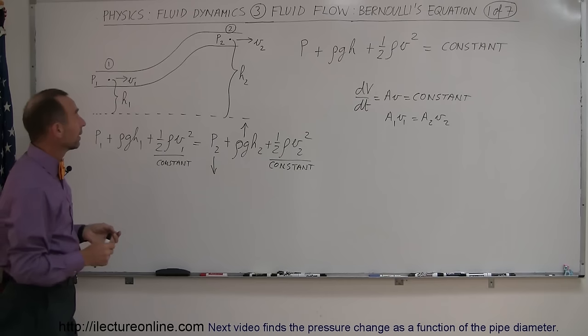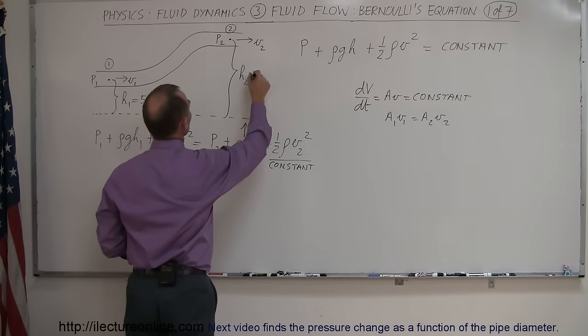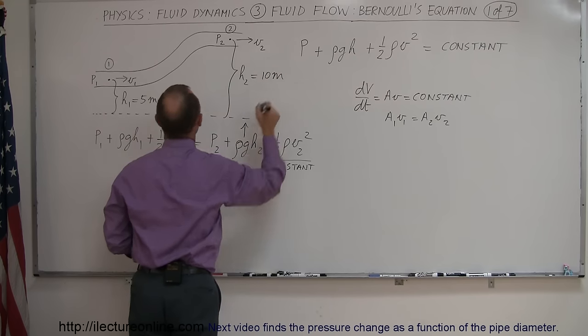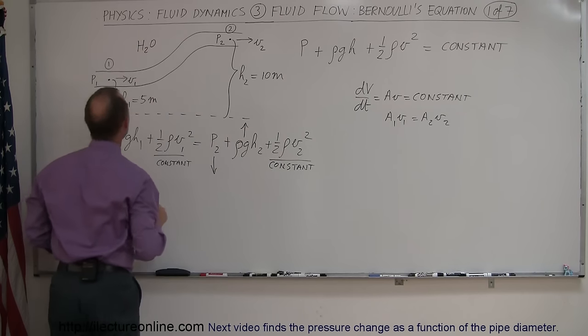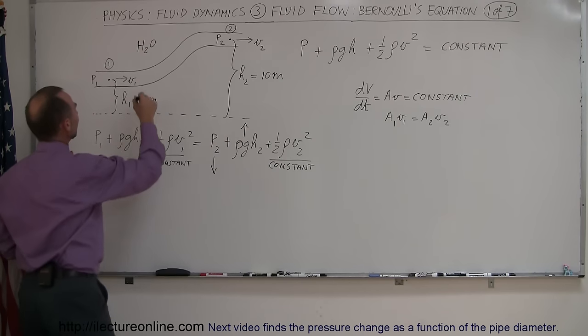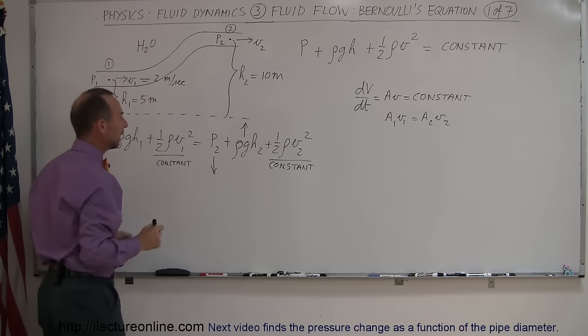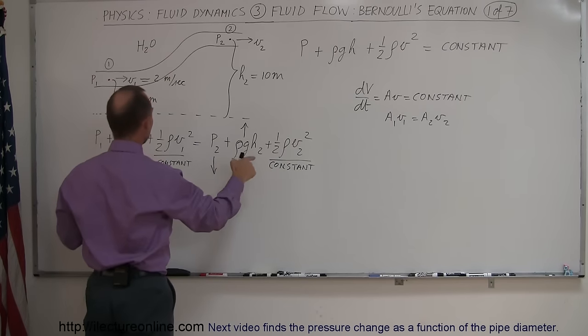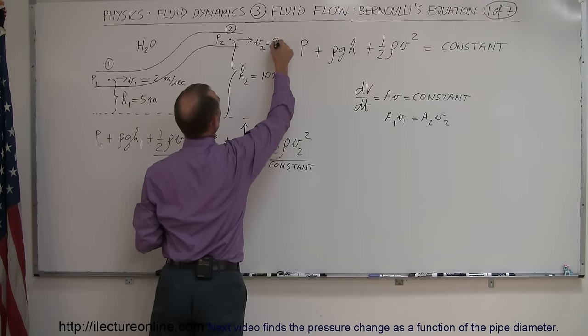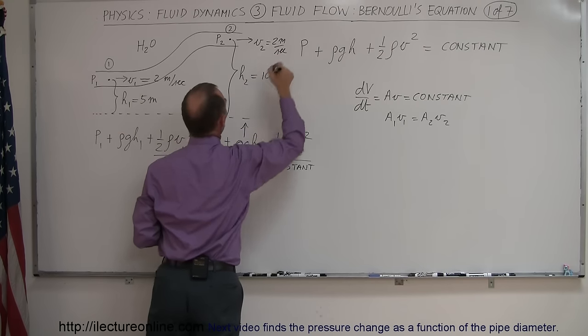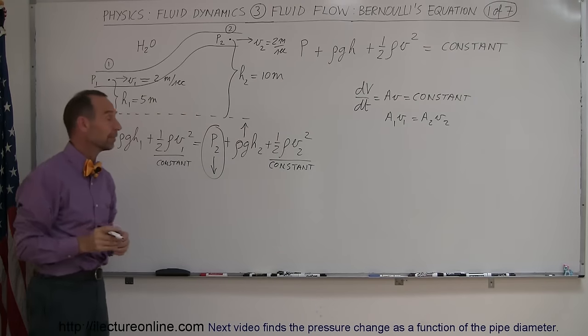Let's say that this height is equal to five meters above the reference point. And this height is equal to ten meters above the reference point. Let's say that the fluid is water, H2O. And let's say that the velocity in the pipe is equal to two meters per second. And the question that would be, given the change in the height, given the velocity here, and of course, knowing that the velocity there also must be two meters per second, what is the pressure at the second point? All right. Let's go ahead and do that.